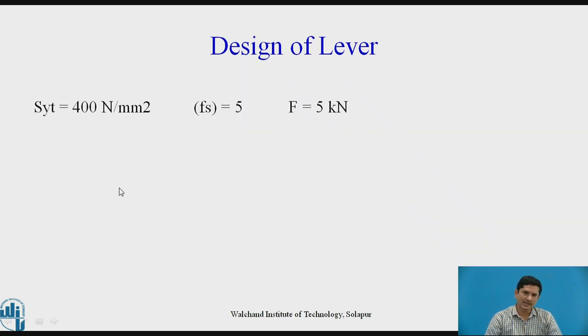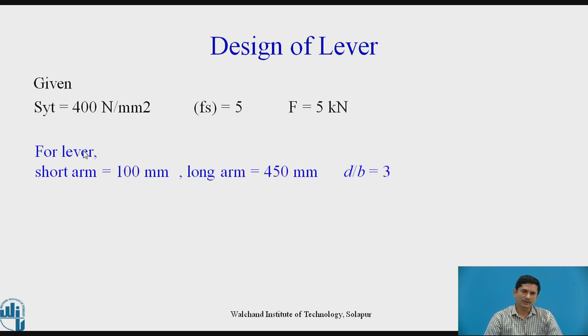Let us begin with the design of the lever. As per the given data, the SYT value is 400 N per mm square, the factor of safety is given as 5, and the force or the load is 5 kN. Then for the lever, the short arm is given as 100 mm and long arm is 450 mm. The ratio D by B is given as 3. For the pin, the bearing pressure is 10 N per mm square and the length by diameter ratio for the pin is 1.25.